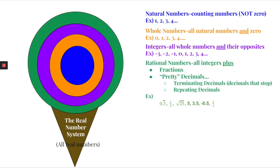Our biggest category is what we call rational numbers. These are all integers, which means whole numbers and natural numbers as well, but now we're adding in fractions and decimals. There's one stipulation: the decimals have to be what we call 'pretty decimals,' meaning terminating decimals that stop, or repeating decimals like 0.33333 and so on.